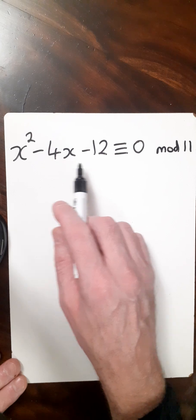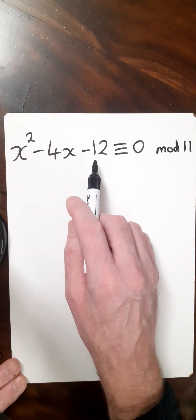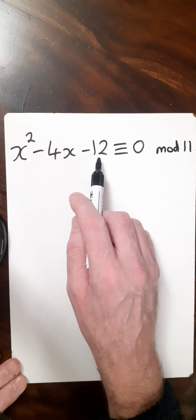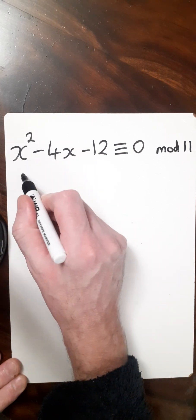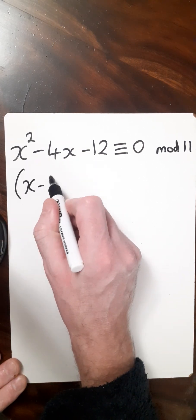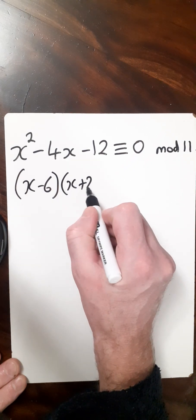Let's first take care of the left-hand side and factor it like a normal quadratic. We want factors of 12 that sum to -4. So we'll have (x - 6)(x + 2).